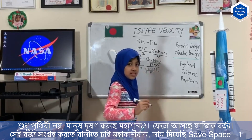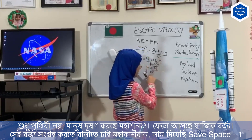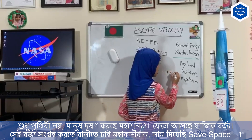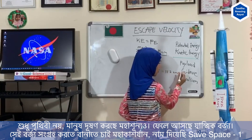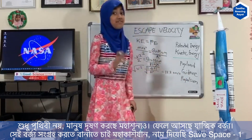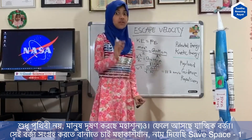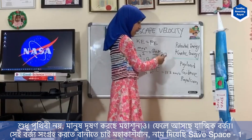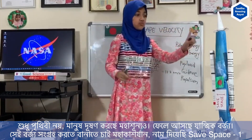Taking the square root, velocity is left, and scientists have done the math and figured out that this is actually 11.2 kilometers per second. That is a very very long distance in a very very quick time. So I need this much speed for this rocket to go up into space and collect the debris.